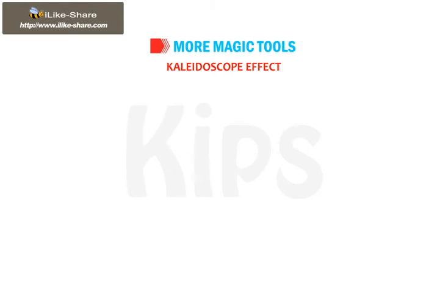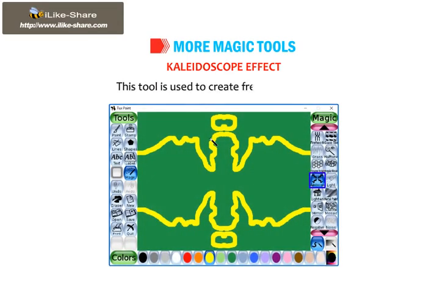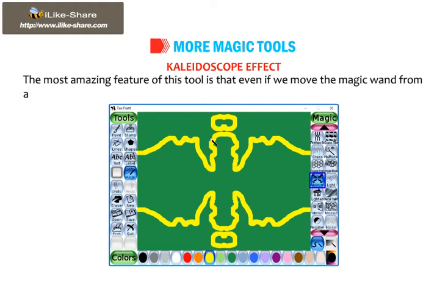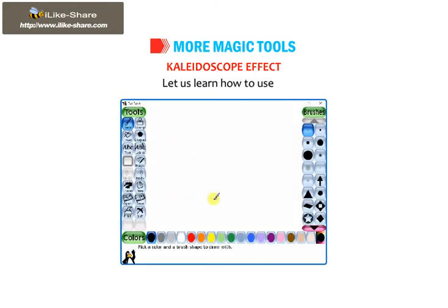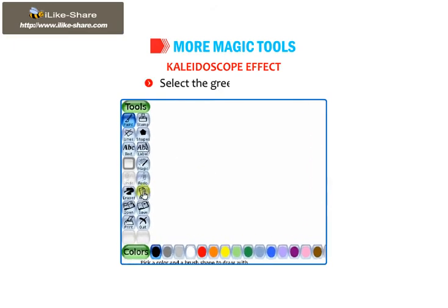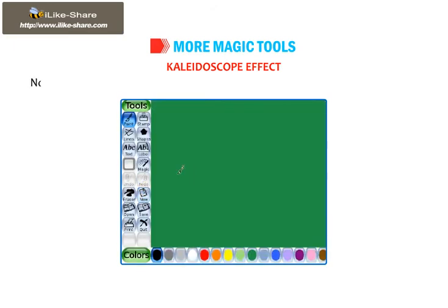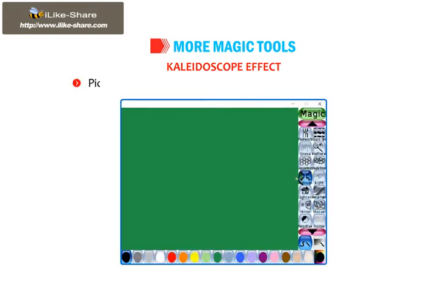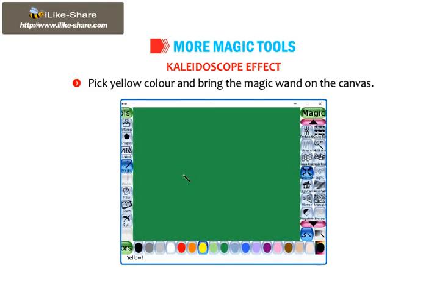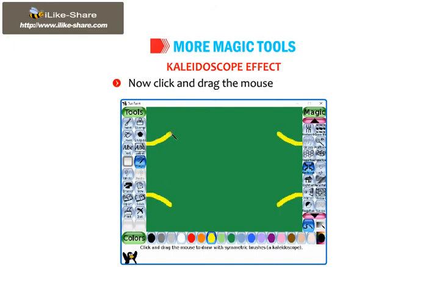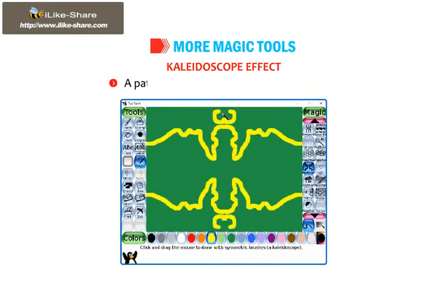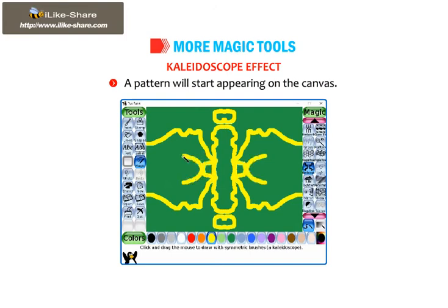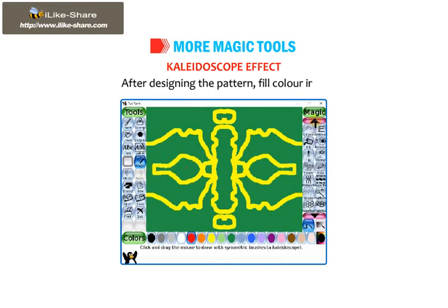Let us learn about the Kaleidoscope effect now. This tool is used to create freehand patterns. The most amazing feature of this tool is that even if we move the magic wand from a single point, it draws from all the four directions. Select the green background. Click the magic tool and select Kaleidoscope effect from the selector. Pick yellow color and bring the magic wand on the canvas. Click and drag the mouse as you wish. A pattern will start appearing on the canvas. After designing the pattern, fill color in it.